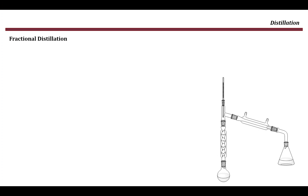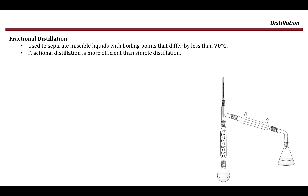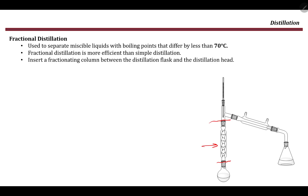Fractional distillation is a better and more efficient separation technique. It can be used to separate liquids whose boiling points differ by less than 70 degrees. In fractional distillation, we use something called a fractionation column — a piece of glass inserted into the setup — which helps in separating compounds that have a boiling point difference of less than 70 degrees.